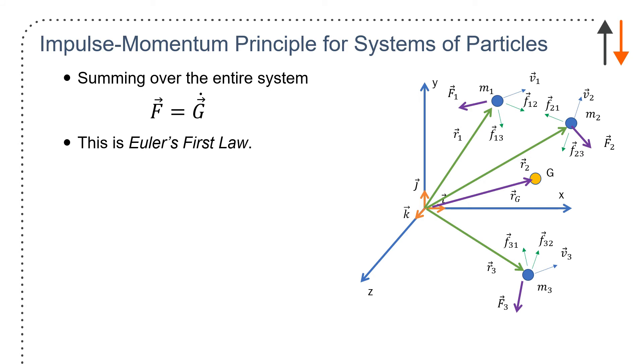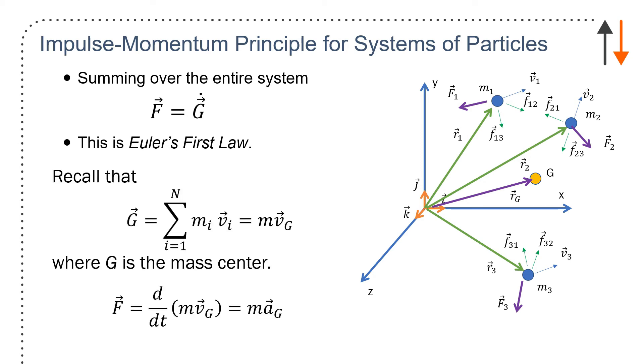Summing over the entire system, I get all forces equals G dot, the time rate of change of the center of mass. And I can write that G equals mvG, and F equals maG. And again, don't make the mistake of mixing up these two terms. It's confusing, and I understand it's confusing. There's not much I can do about it, because we do need to remain consistent with the text.